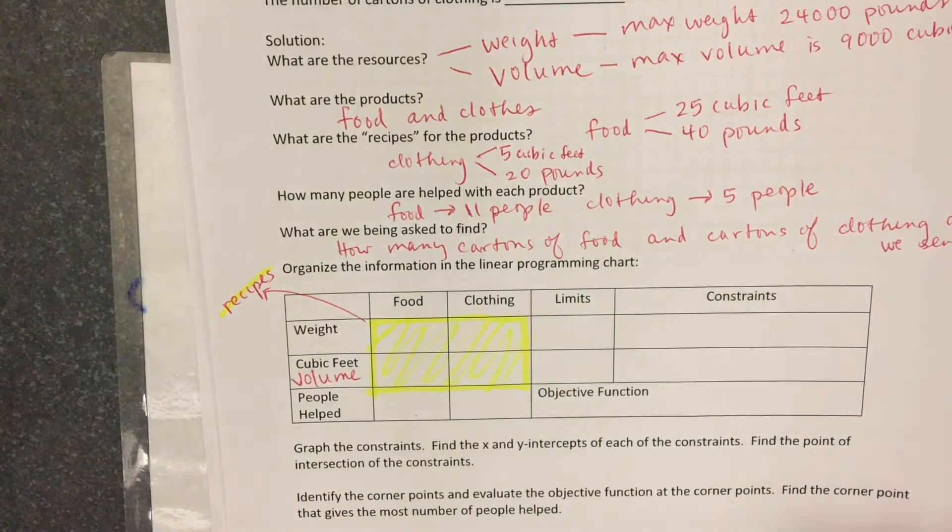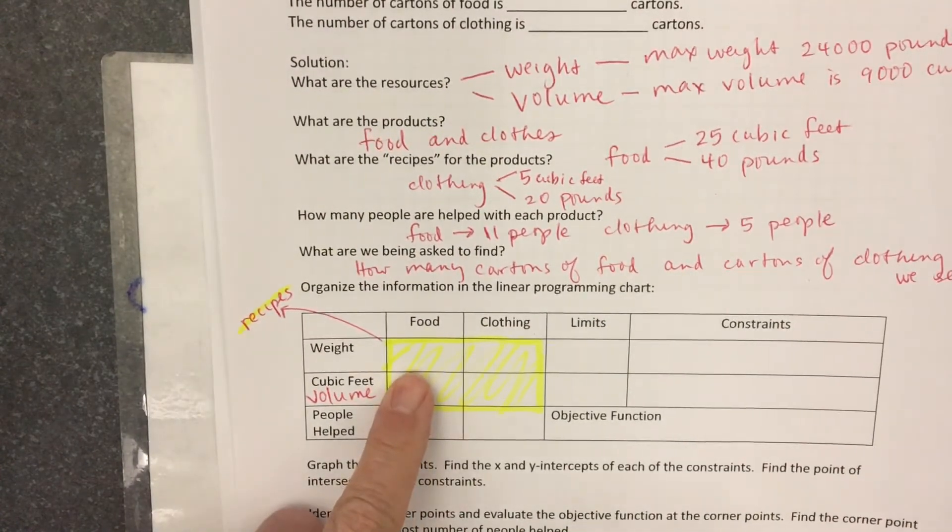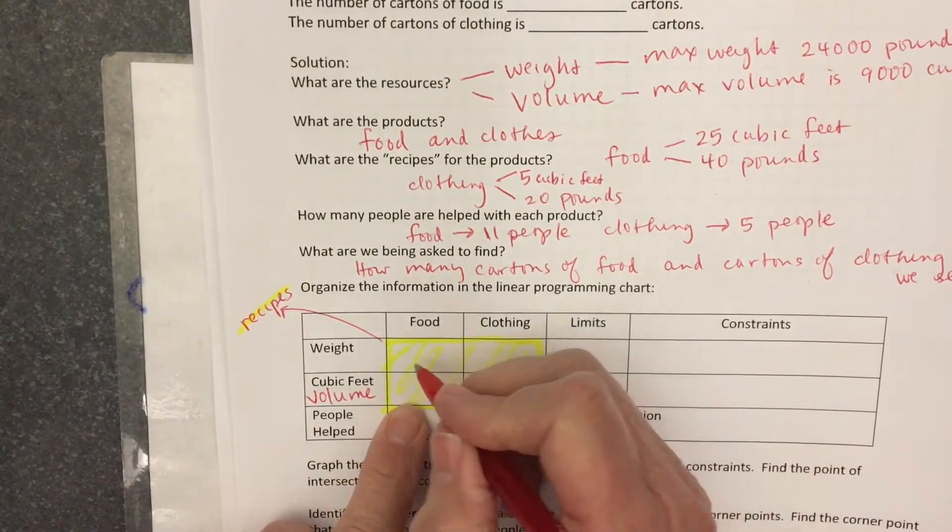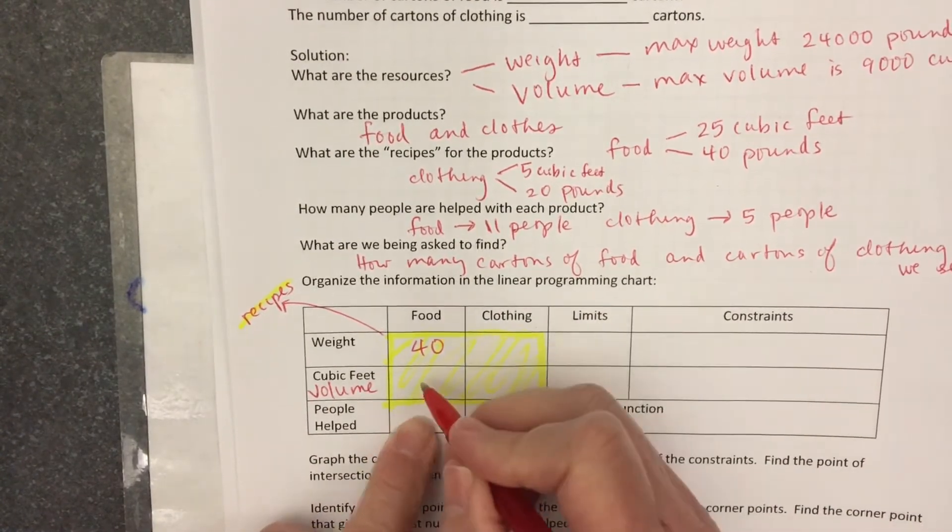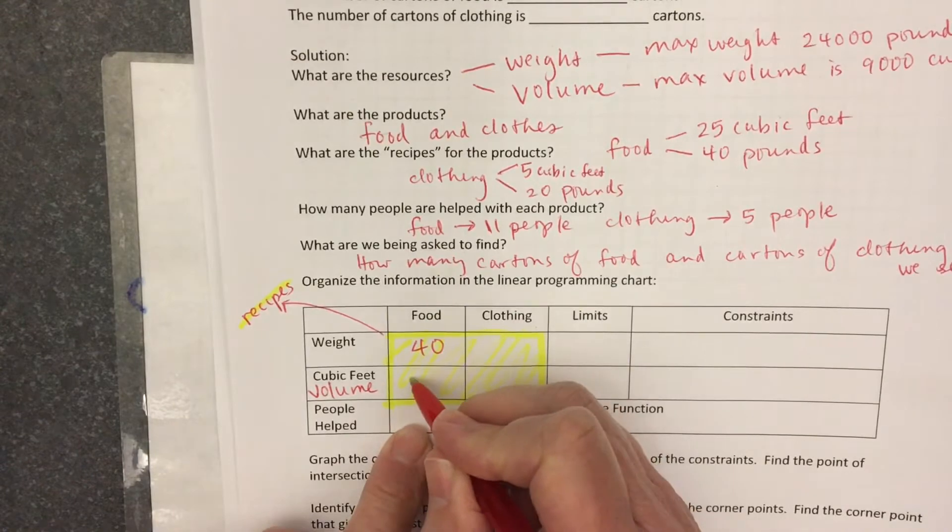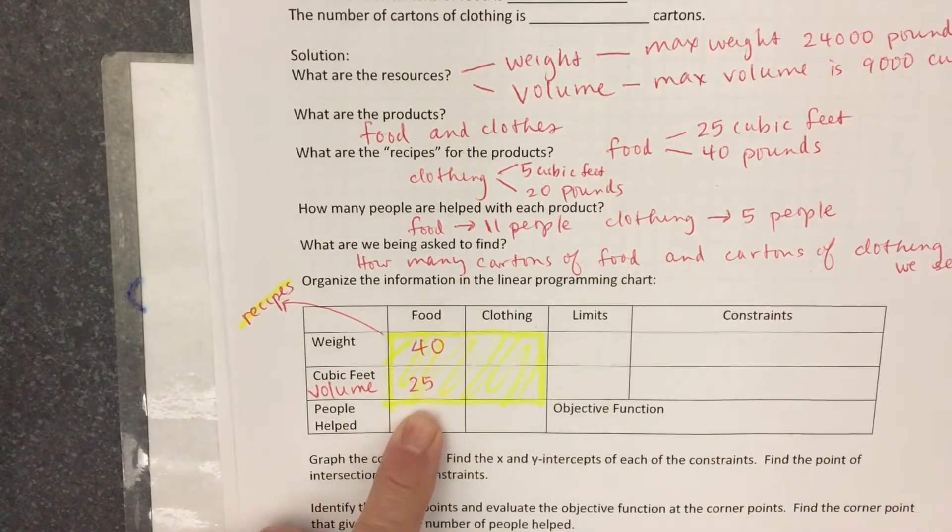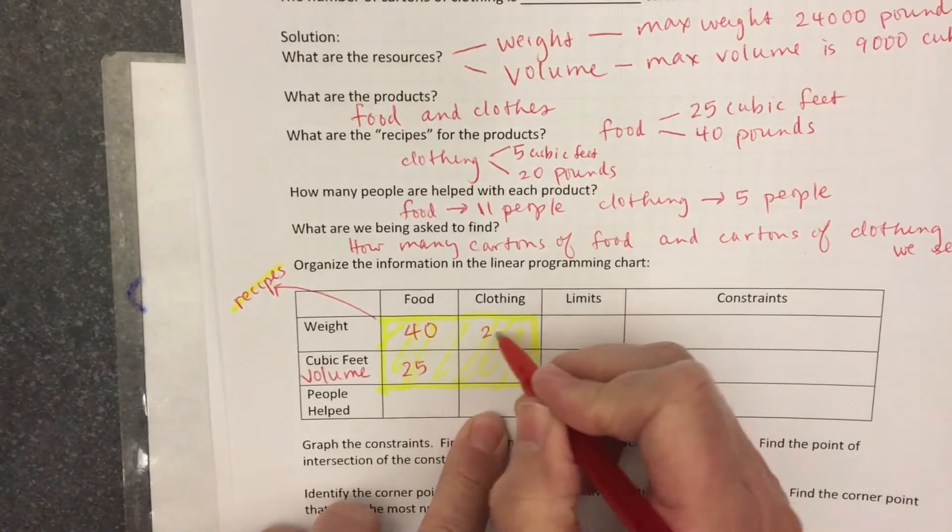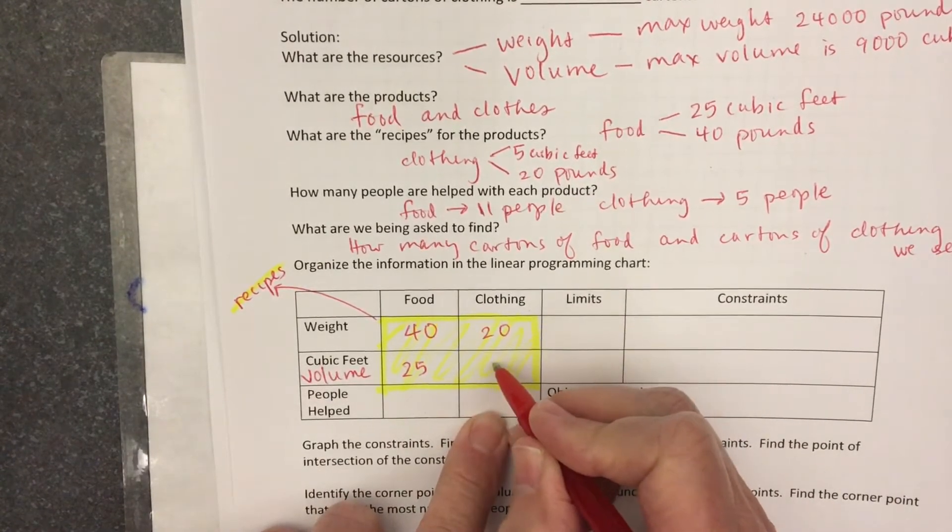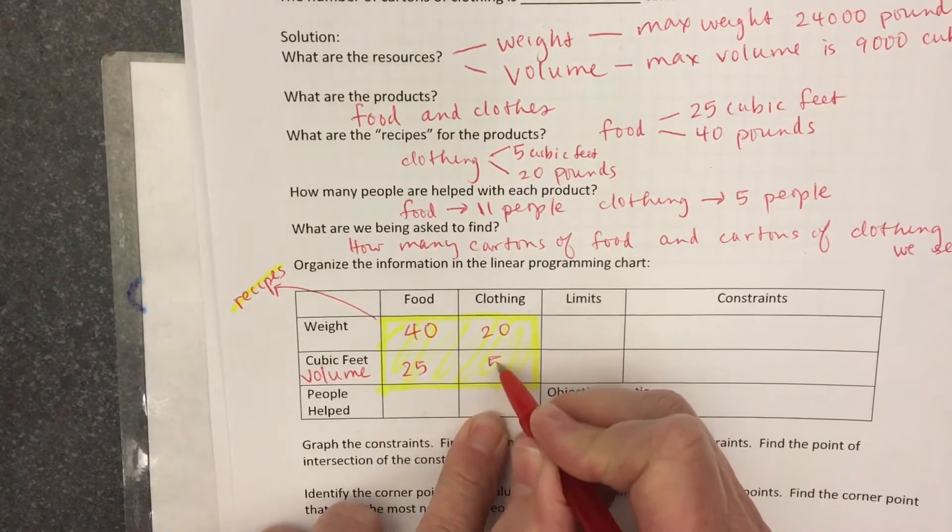So one carton of food weighs 40 pounds and it takes up 25 cubic feet. One carton of clothing weighs 20 pounds and it takes up 5 cubic feet.